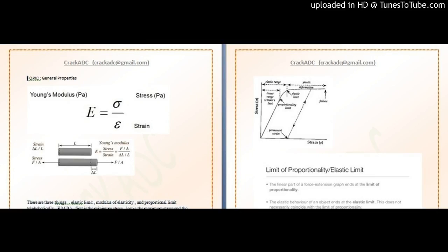Remember the series for Young's modulus: maximum is cobalt chromium or cast chrome, then wrought metal, then gold. Stiffness follows the same order. The undercut needed is the opposite: wrought gold will always have the maximum undercut, and cobalt chromium or cast chrome will have the minimum undercut.